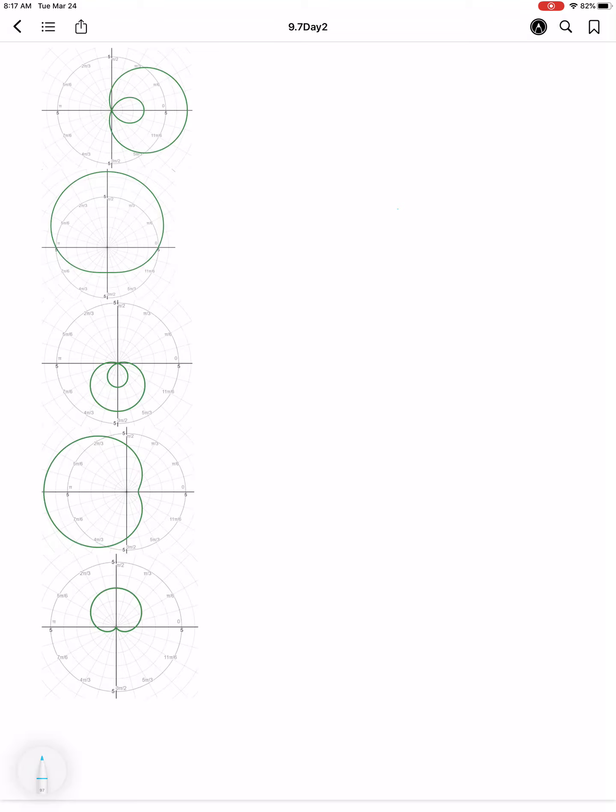So we'll start with the limaçons. And the nice thing about the limaçons is I just have to identify that it's a limaçon. For each of these limaçons, the way that we're going to write the equation is exactly the same. So just remember that our limaçon equation is R equals A plus or minus B cosine theta, or R equals A plus or minus B sine of theta.